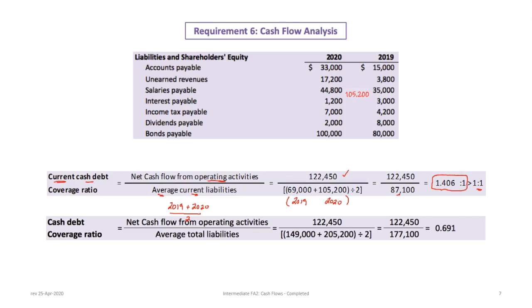The cash debt coverage ratio is similar but uses average total liabilities rather than just current liabilities. Net cash flow from operating activities ($122,450) divided by average total liabilities: 2019 total of $149,000 plus 2020 total of $205,200, divided by two, gives $177,100. This produces a ratio of approximately 0.69, which is still quite high given it includes the bonds. The higher the number the better — the company covers more than half its total liabilities with operating cash flow.